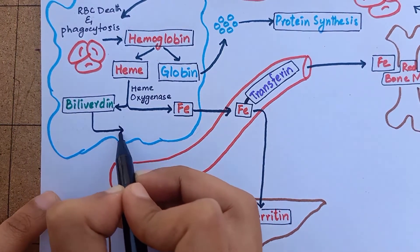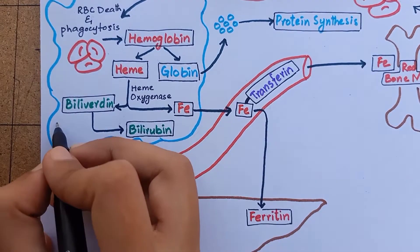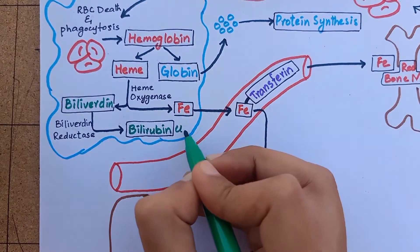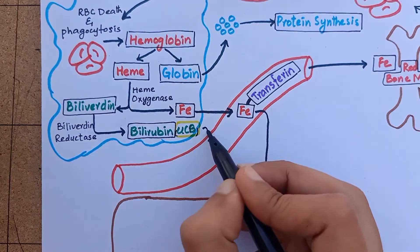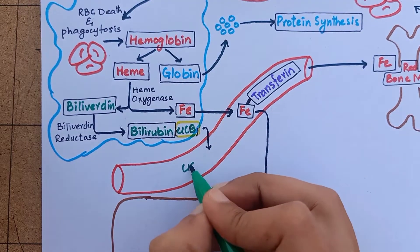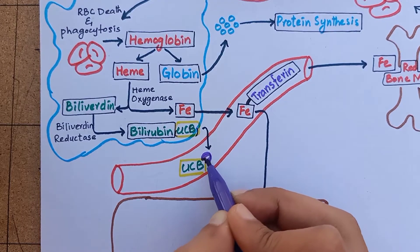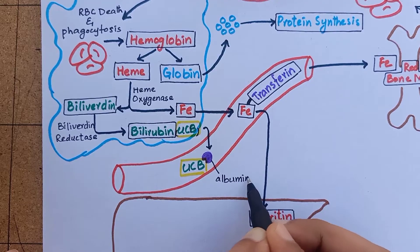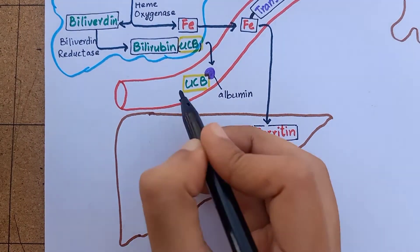The biliverdin is further reduced to a bile pigment called bilirubin by the enzyme biliverdin reductase. The bilirubin produced here is unconjugated bilirubin and is released into the blood. The unconjugated bilirubin is a lipid soluble molecule and cannot travel through blood in an unbound form. So it combines with plasma albumin and is transported throughout the blood in bilirubin albumin combination.